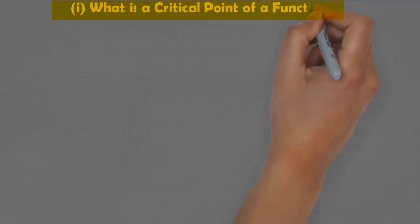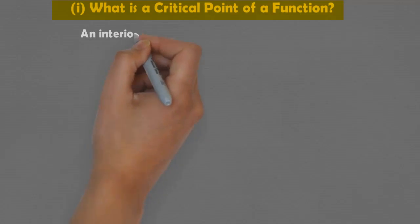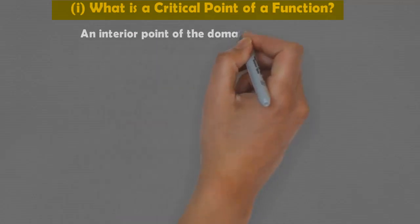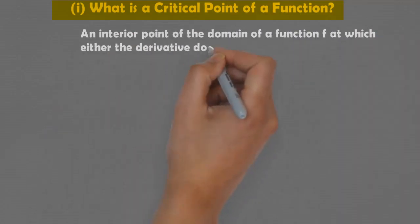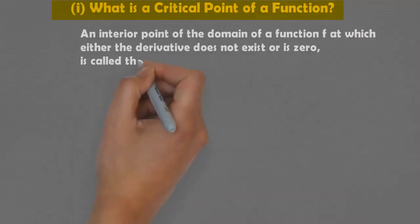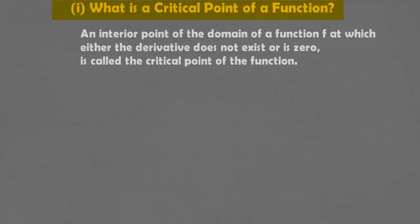What is the critical point of a function? Its mathematical definition is: it is an interior point of the domain of a function f at which either the derivative does not exist or is zero. Such points are called critical points.